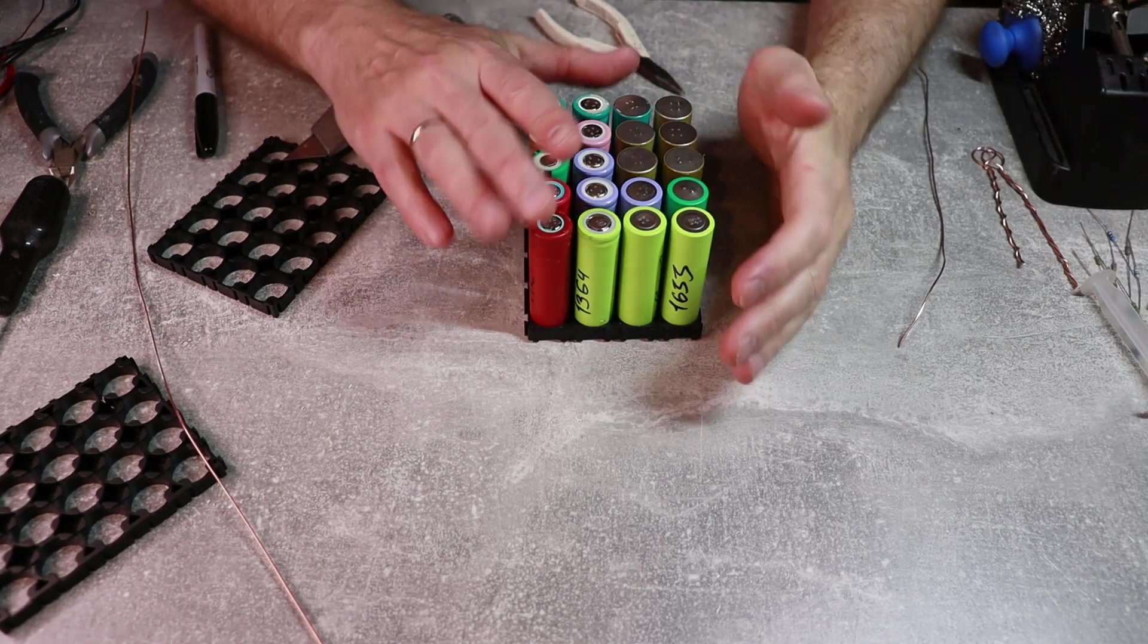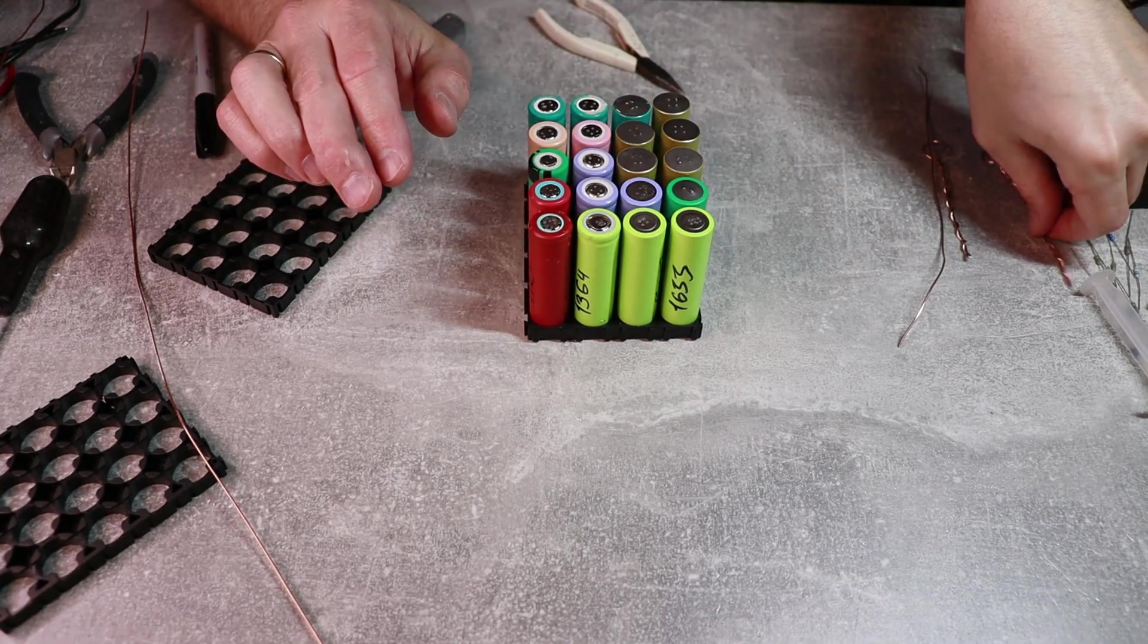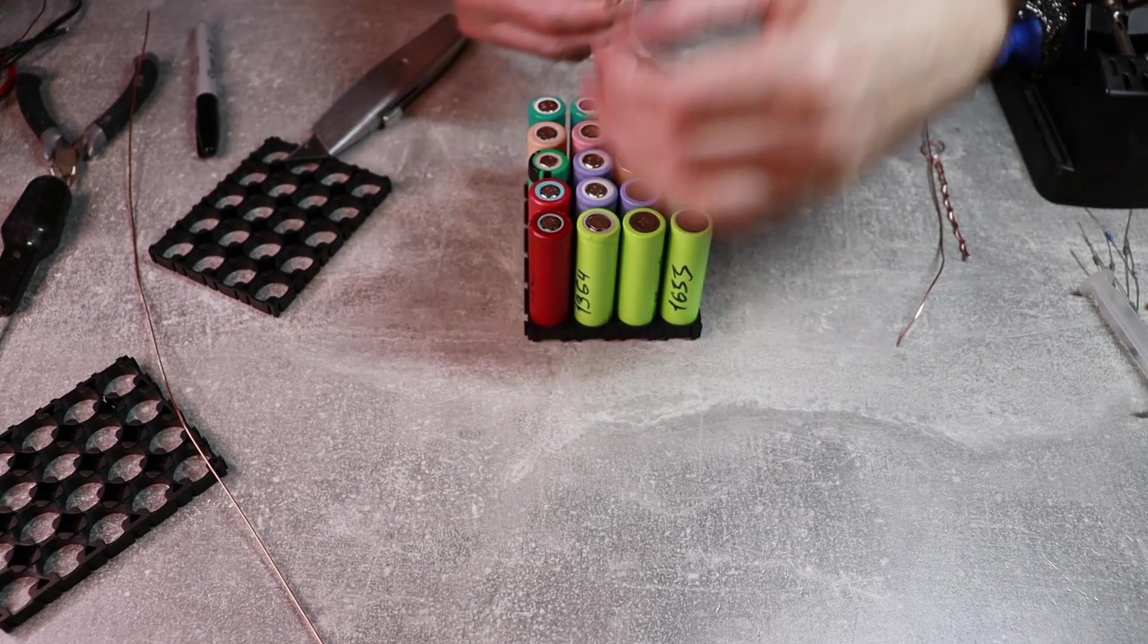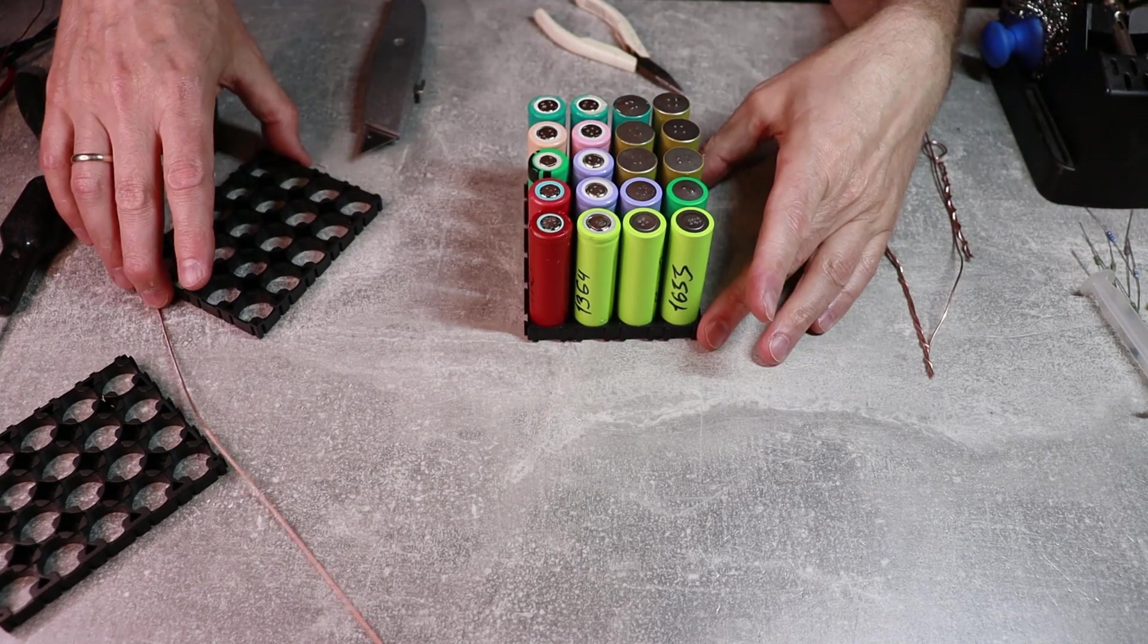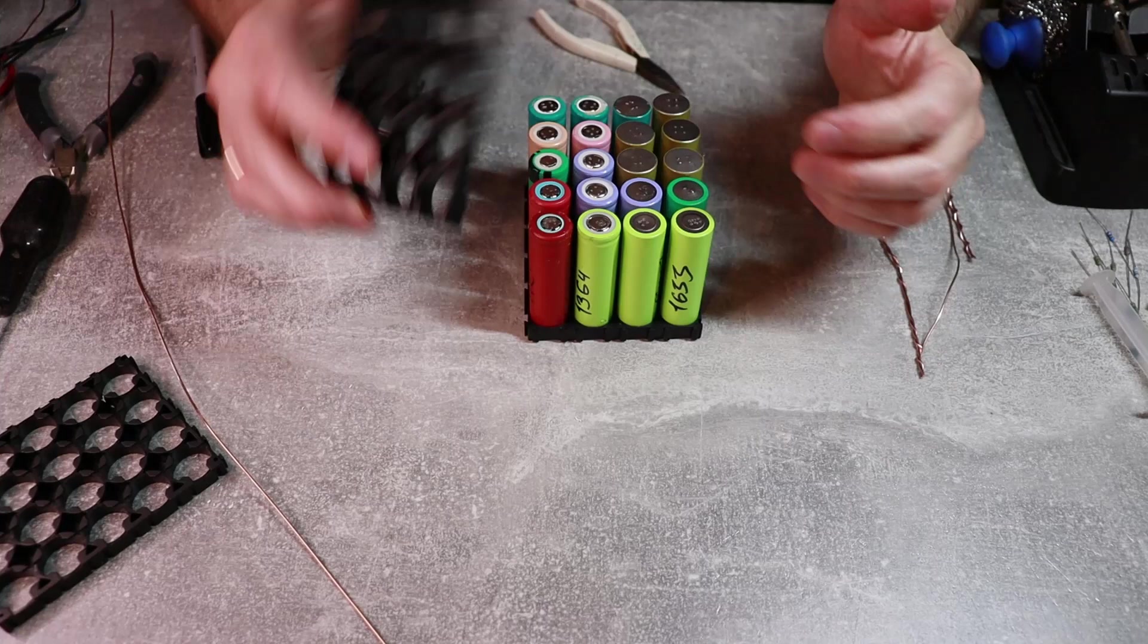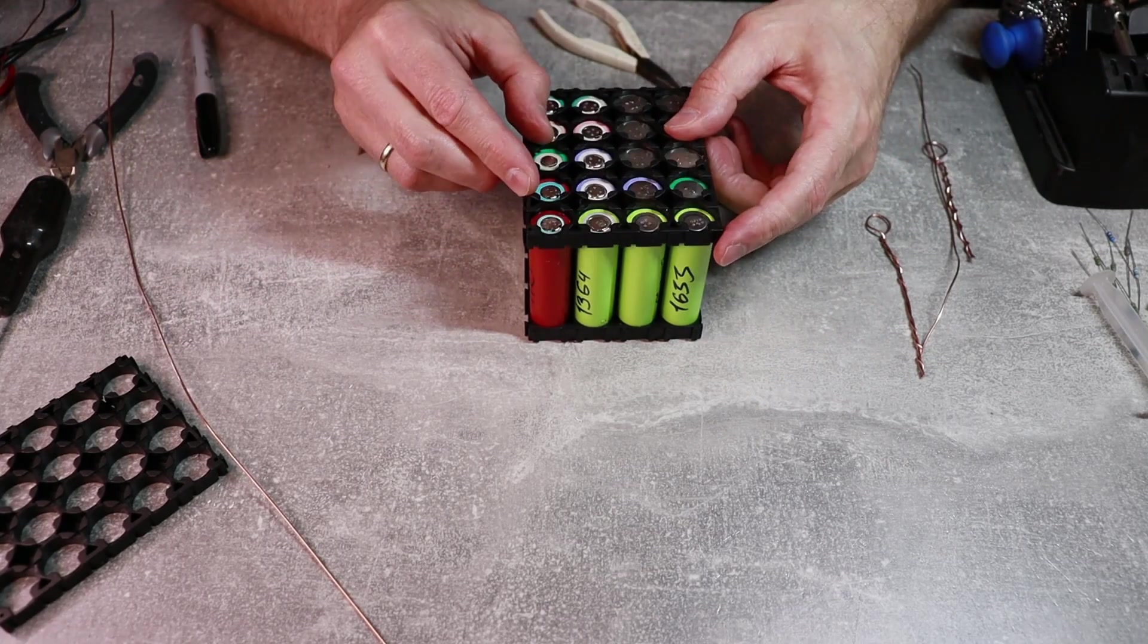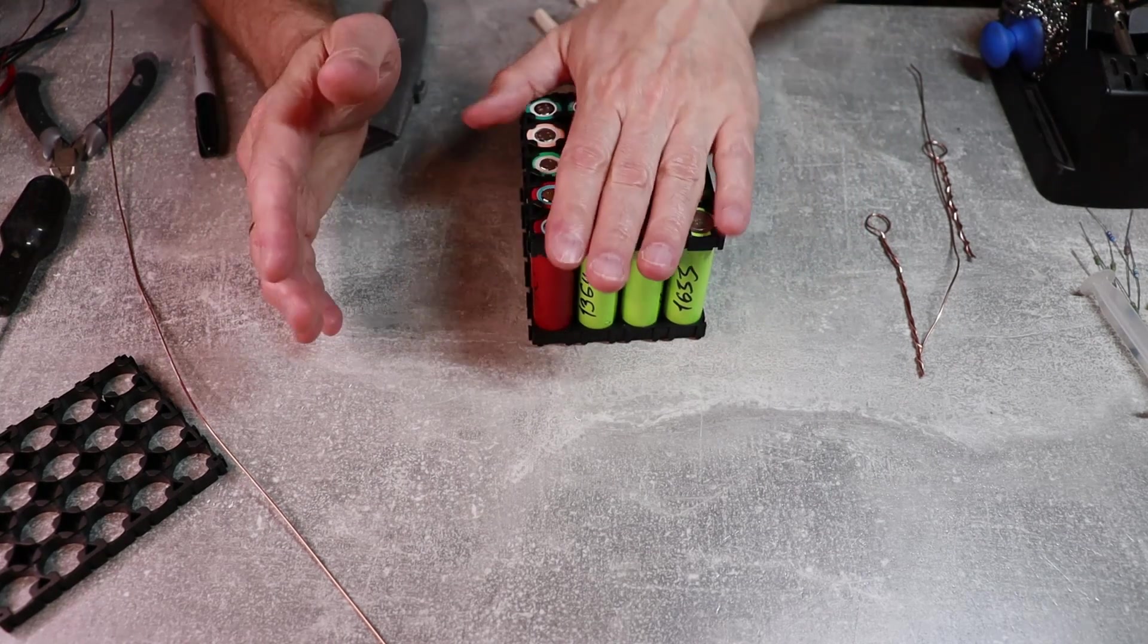So these are my cells here and I'm gonna use those bus bars that I've just made and just mount them like this. These are not the best condition cells but you know I'm just gonna use these modules just for testing only.